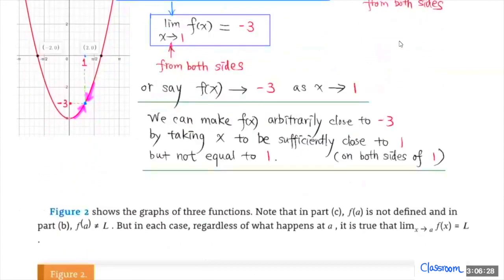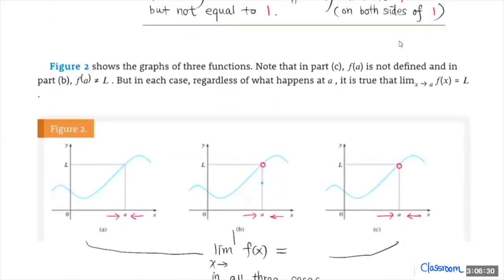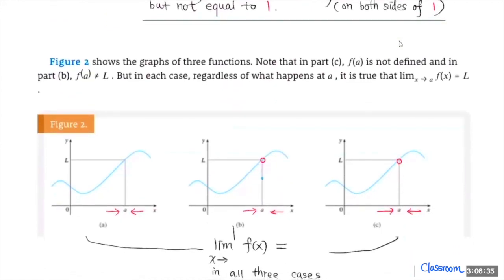Now we have three examples here — three cases. The difference between them: the first one, the curve has no break at a. This second one has a break — a gap at a — and the function value at a is actually defined to be a different number, which is not equal to L. So the function value is somewhere other than L.